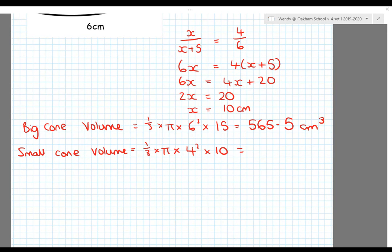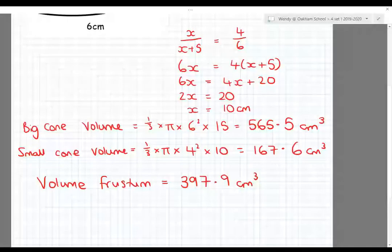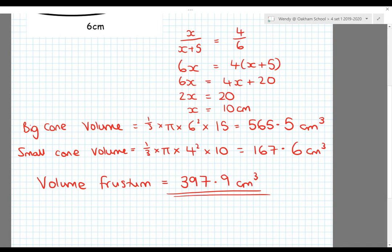The volume of the frustum is the big cone subtract the small cone: 565.5 minus 167.6 equals 397.9 centimeters cubed. That's the final answer.